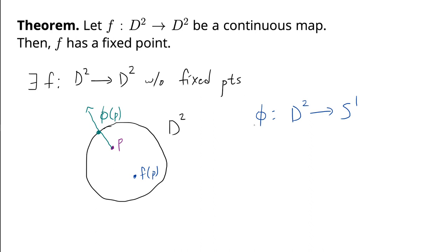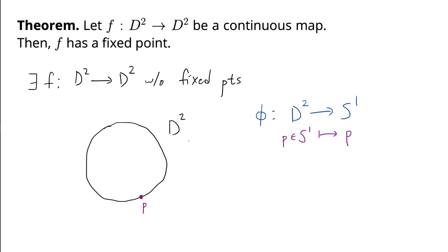There are some things to notice about φ. First, φ is a continuous map. To informally argue this: if we move infinitesimally from P, then because F is continuous, the output F(P) moves infinitesimally, which results in the value of φ moving infinitesimally as well. Now the interesting property of φ is that if we consider a point P lying in S1, the boundary of D2, then P gets mapped to itself under φ. This is because the ray starting at P in the direction from F(P) to P first intersects S1 at P itself. So any point in S1 is fixed under φ.